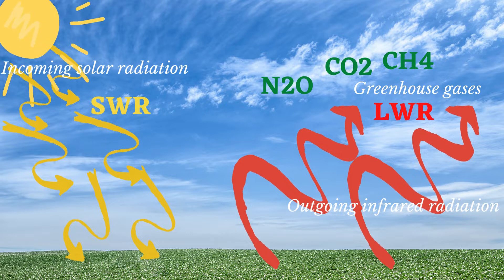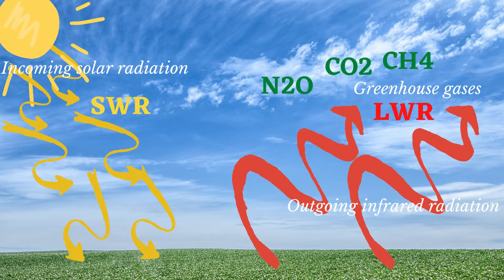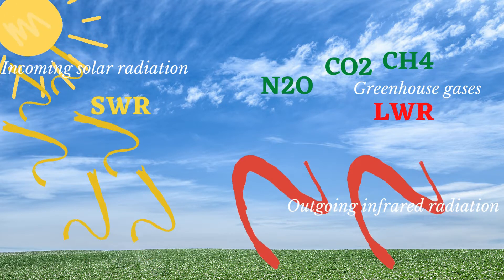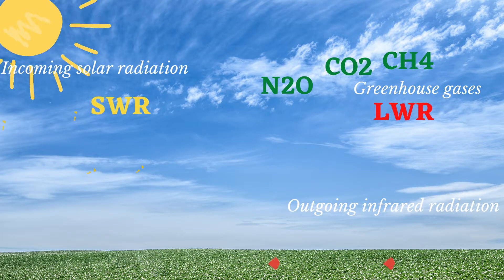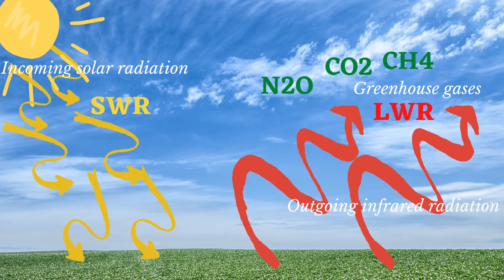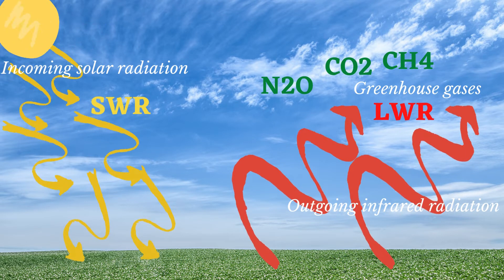The greenhouse gases will behave as invisible to the incoming solar radiation, simply allowing it to penetrate, while they absorb the infrared radiation from the earth's surface. And this is what gives the atmosphere its temperature.